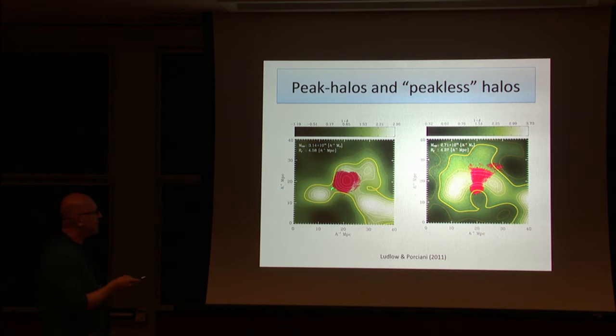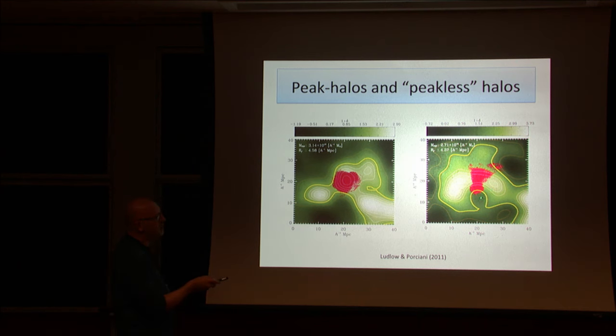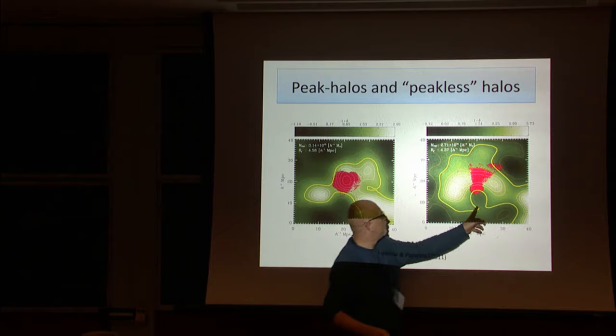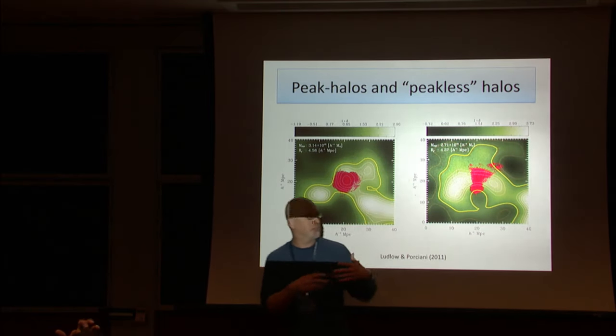So trace back halos in the initial conditions. This is the density field; the yellow line shows the 1.69, the critical density. This is a clear peak halo that totally sits on a density peak, one of what we call peak halos. You see they tend to be kind of very elongated in the initial conditions and they tend to sit in between peaks. They're totally generated by flow of particles from the underdense regions that share cloth in the middle.